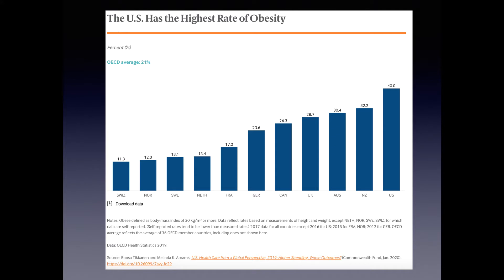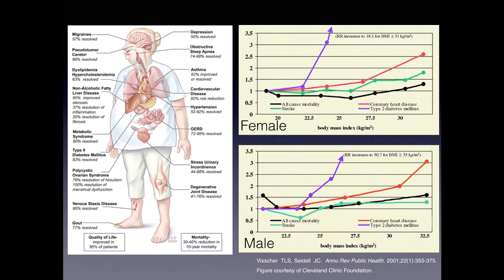Obesity is the most important preventable risk factor contributing to major U.S. morbidity and mortality. The major global epidemic of obesity has been also linked to cardiovascular disease, cancer, and premature mortality while remaining a common associated adverse risk factor for in-hospital related conditions.